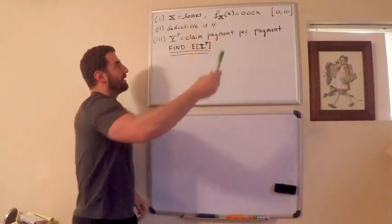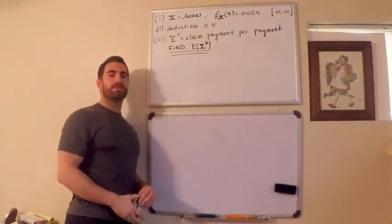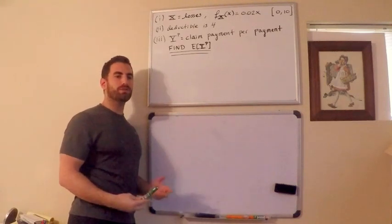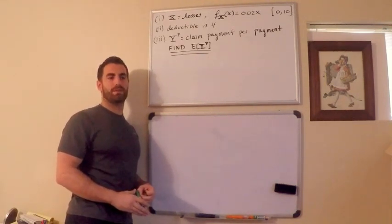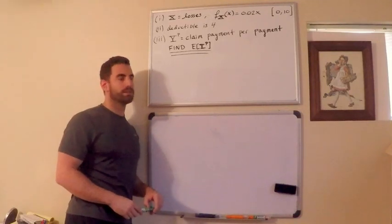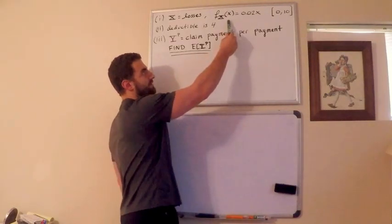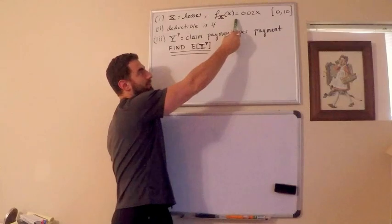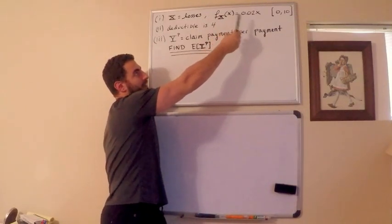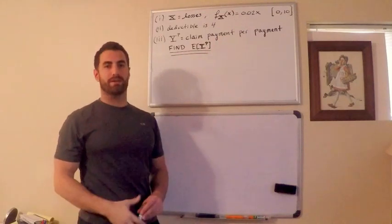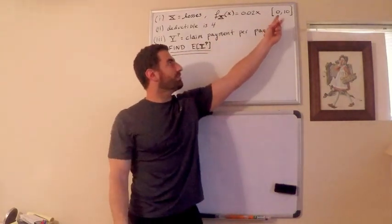How much you lose can be thought of as a probability. For instance here, I have a probability density function. This is telling me the probability of me losing a certain amount. The amounts I can possibly lose are 0 to 10.